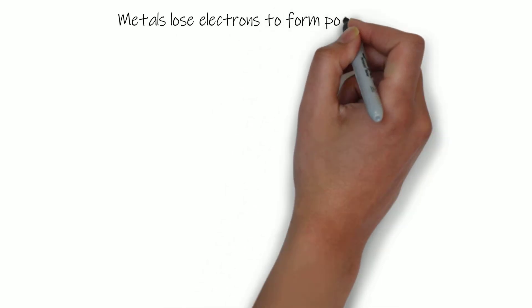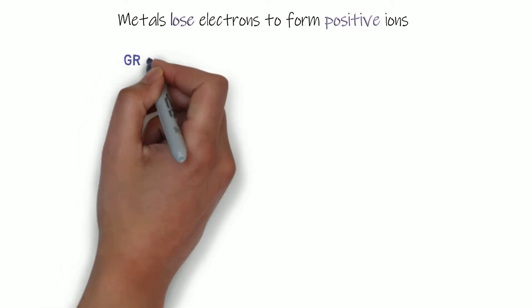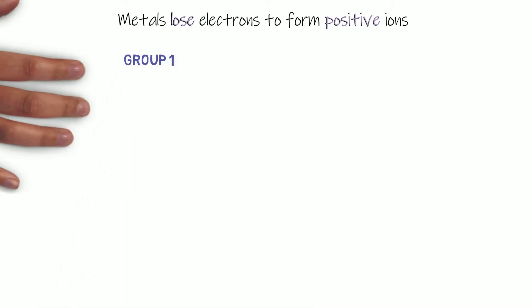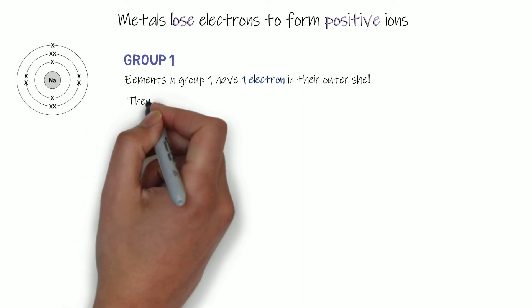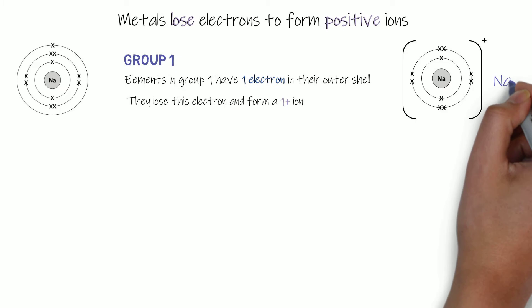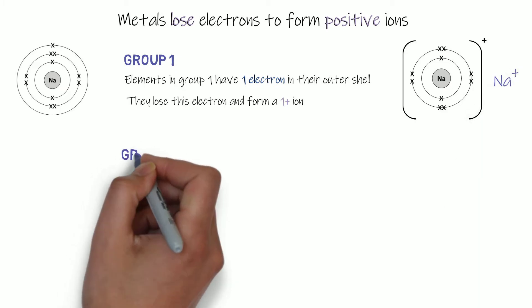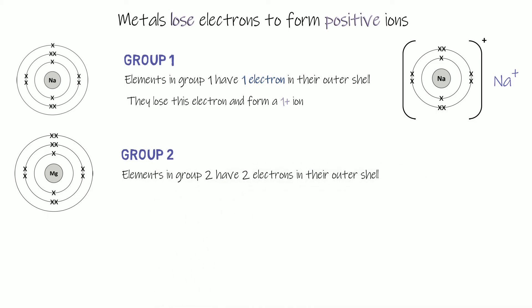This is what happens when metals form ions. Metallic elements tend to lose electrons and form positive ions. For example, sodium is in group one — elements in group one have one electron in their outer shell, they lose that electron, the shell underneath is full, making them stable. Because they've lost one negative electron, they form a 1+ ion, so the sodium ion has the formula Na⁺.